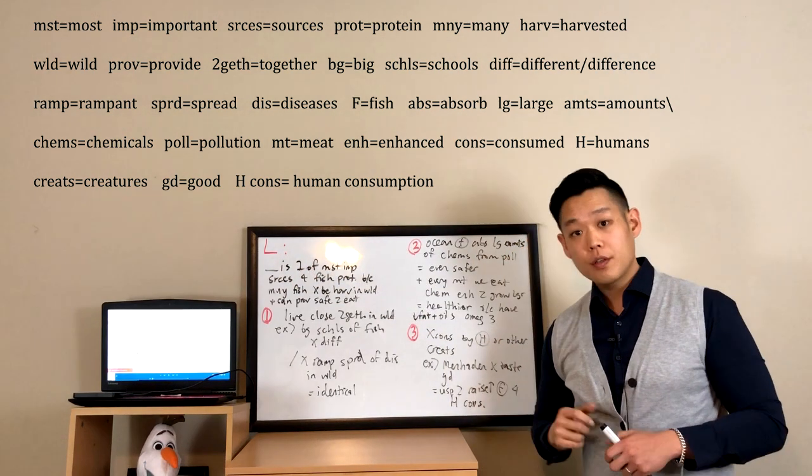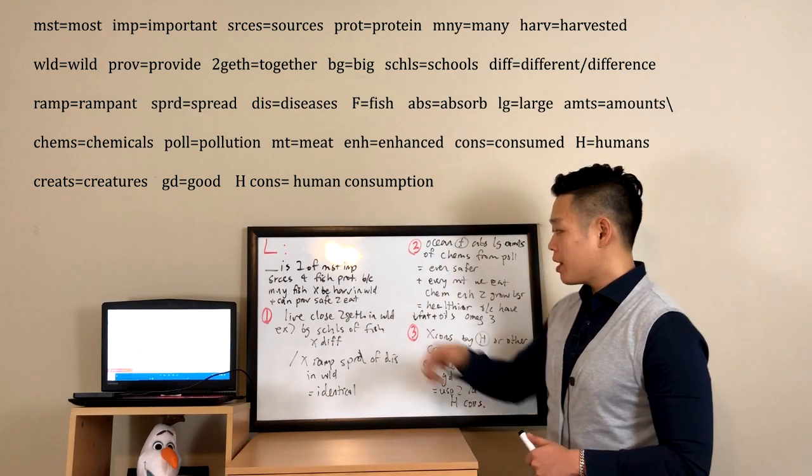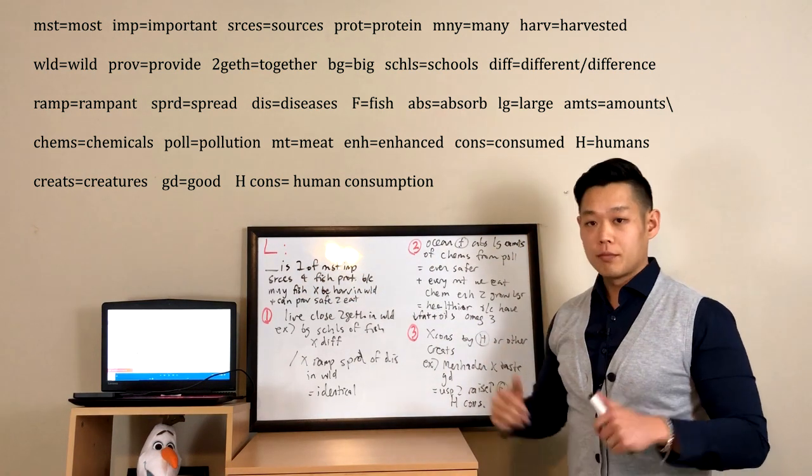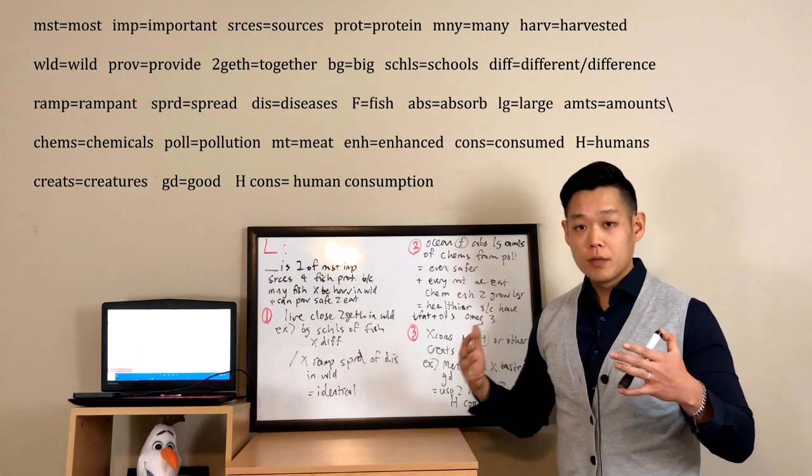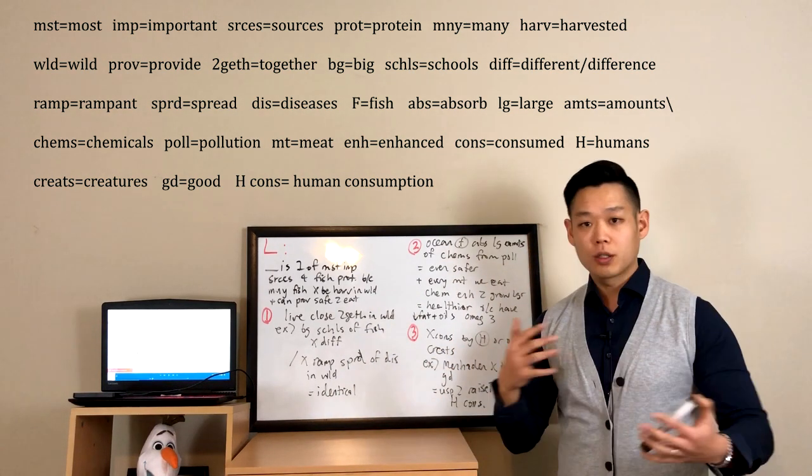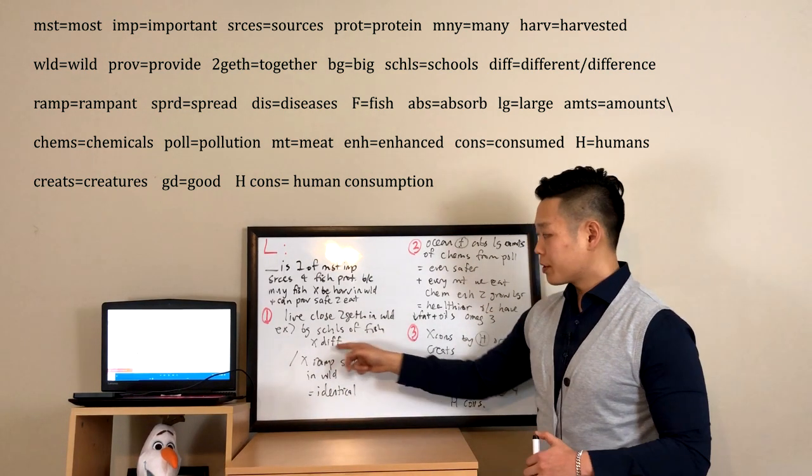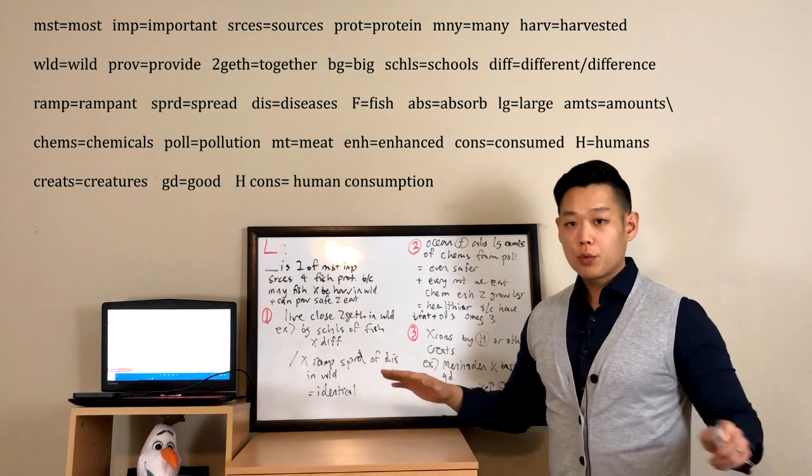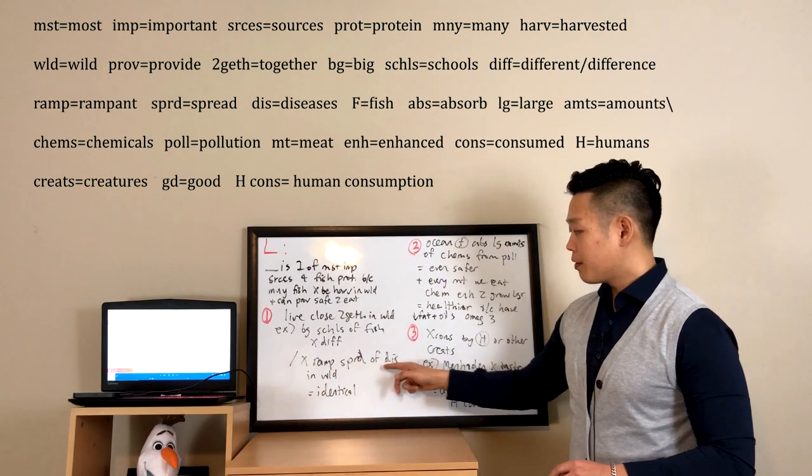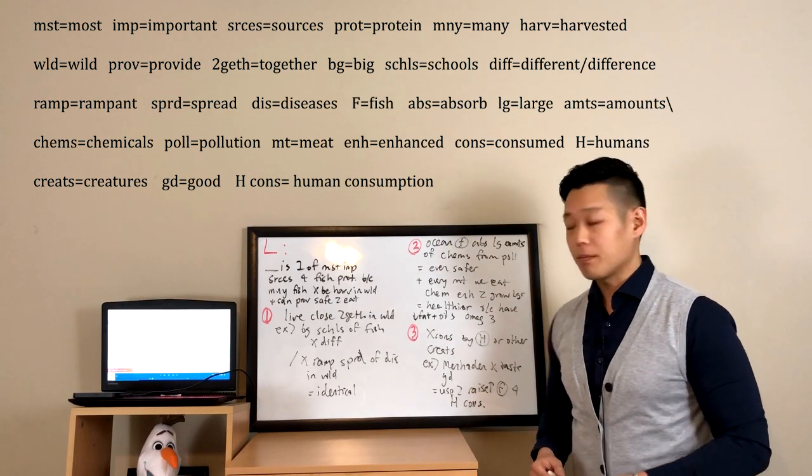All right, now for the first argument, the professor said that we shouldn't forget that fish live very close together in the wild. For example, we are all familiar with enormous schools of fish, right? Groups of fish, because we see them all the time in pictures, videos, and even in real life. So the professor is saying that the situation is not different. Okay? However, there is no rampant spread of diseases in the wild, so yeah, the situation is very similar or even the same.